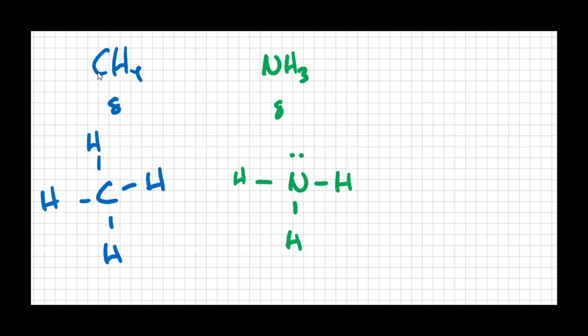So the last two electrons are a lone pair, an unbonded pair of electrons on the nitrogen. Water also has eight valence electrons. Hydrogen is never the central atom, so I'm going to put oxygen in the middle and make two bonds — that's four — and the remaining four go on the oxygen. Each of these molecules has four sites on the central atom: four bonds for methane, three bonds and a lone pair for ammonia, and two bonds and two lone pairs for water.